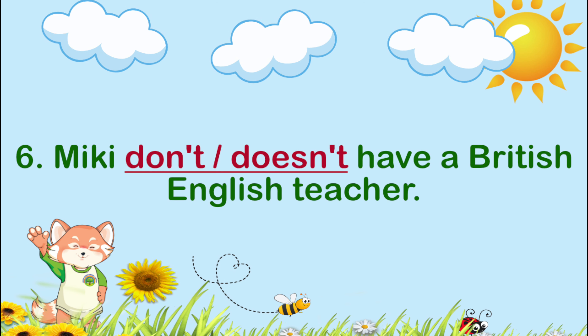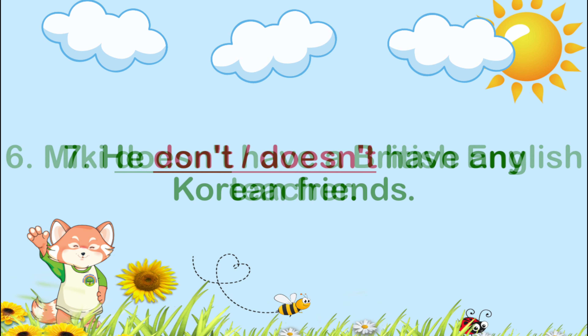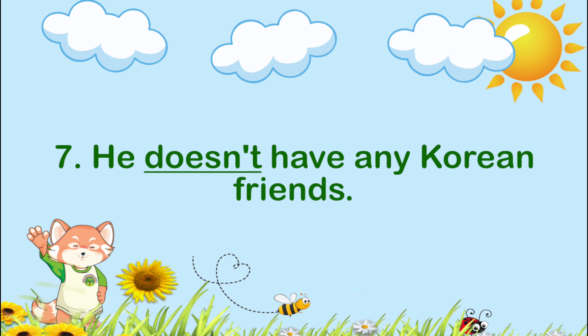Number six: Meekie ___ a British English teacher. The answer is doesn't have. Meekie doesn't have a British English teacher. Number seven: He ___ any Korean friends. The answer is doesn't have. He doesn't have any Korean friends.